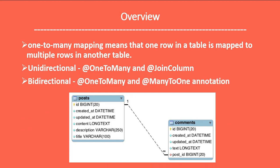There are two types of mappings: unidirectional and bidirectional. We can define one-to-many unidirectional mapping using @OneToMany and @JoinColumn annotations, and we can define one-to-many bidirectional mapping using @OneToMany and @ManyToOne annotations. In this video I'm going to show how to perform one-to-many unidirectional mapping using @OneToMany and @JoinColumn annotations.